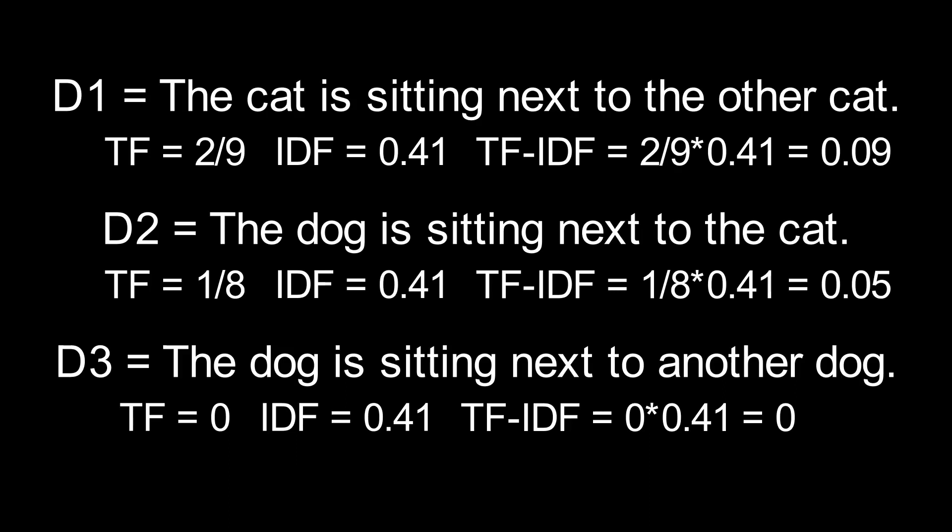Document 1 has the highest TF-IDF, so this document is the most relevant to the search term. Document 3 has a TF-IDF of 0, so it's not relevant to the search term at all.